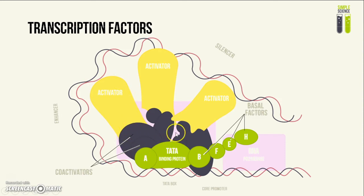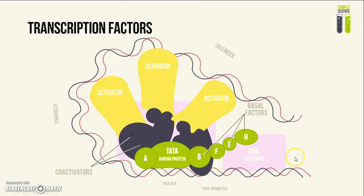The coactivators interact with basal transcription factors, which then interact with the enzyme, which then interacts with the promoter region where the DNA molecule to be transcribed is located. This sequence of interactions enables more mRNA to be transcribed at a certain point in time.